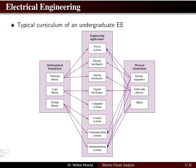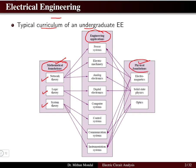A typical curriculum of an electrical engineering undergraduate program generally requires mathematical foundations, physical foundations, and these lead to engineering applications. The mathematical foundations include network theory, logic theory, and system theory, while the physical foundations cover electromagnetics, solid state physics, and optics.